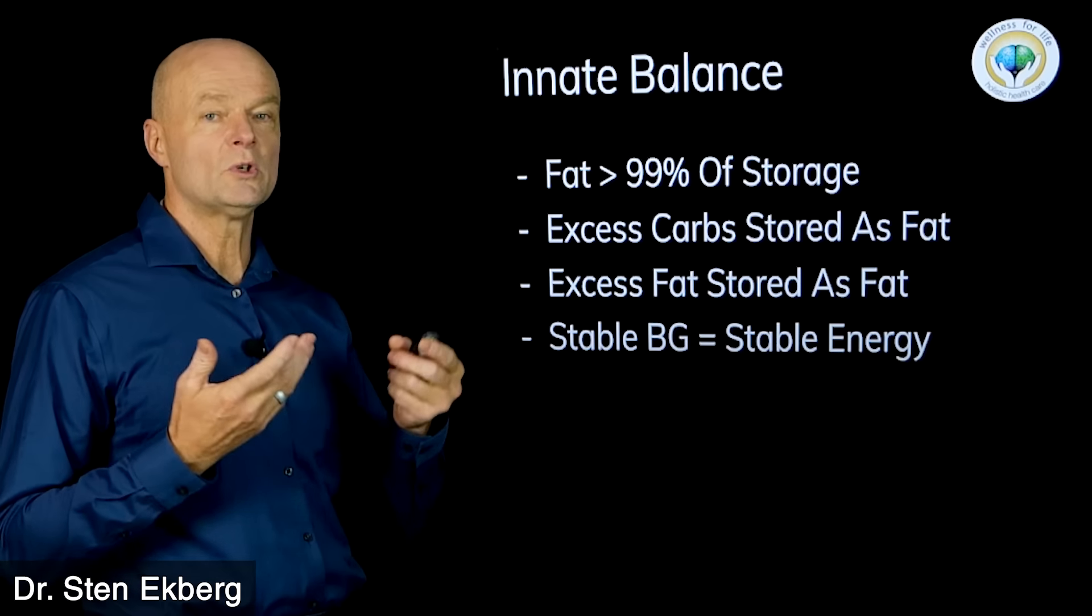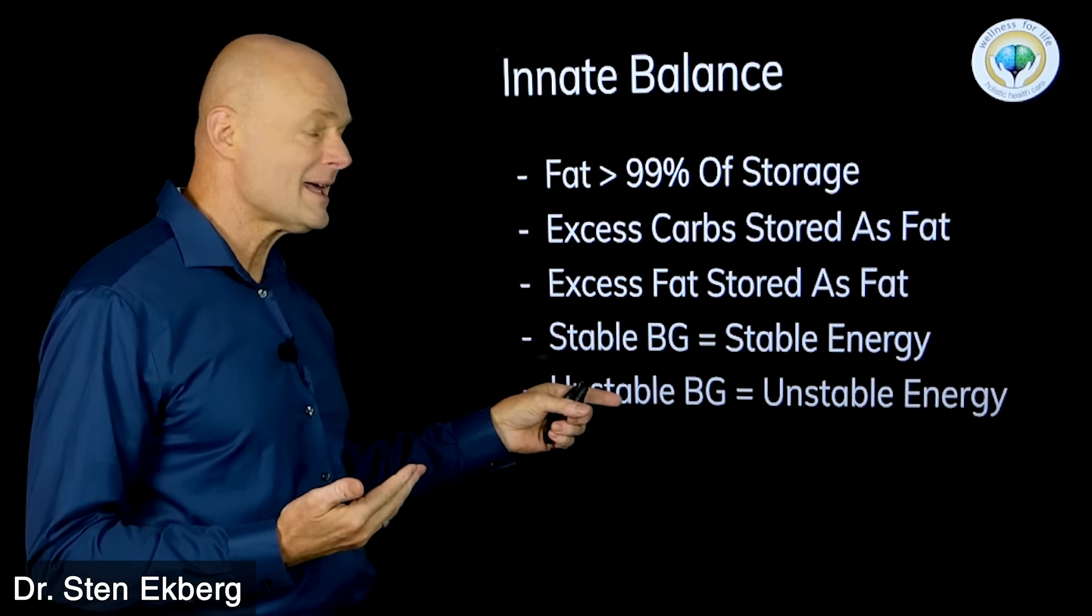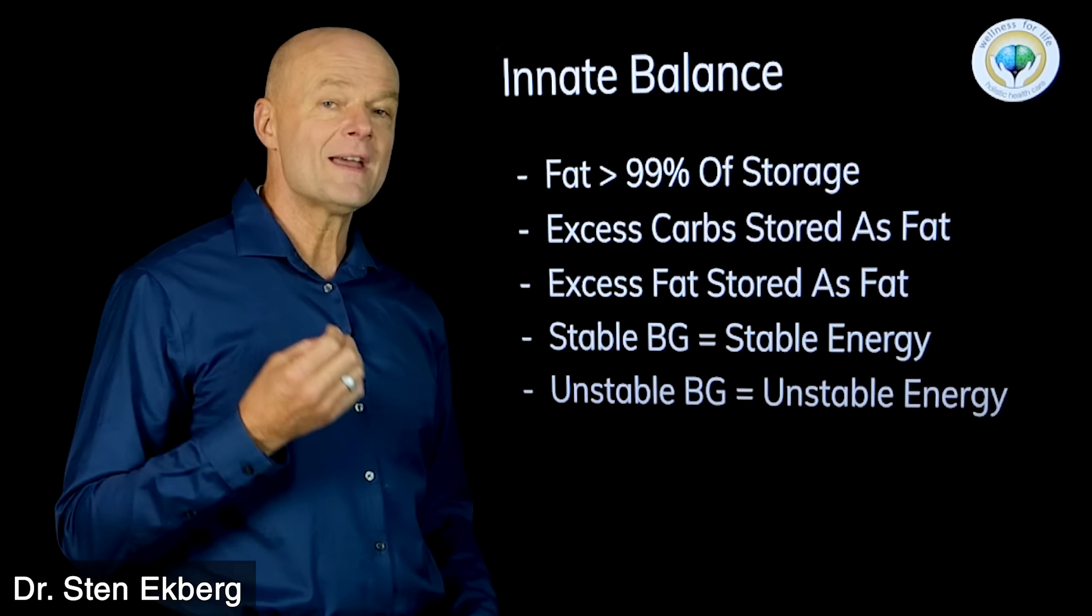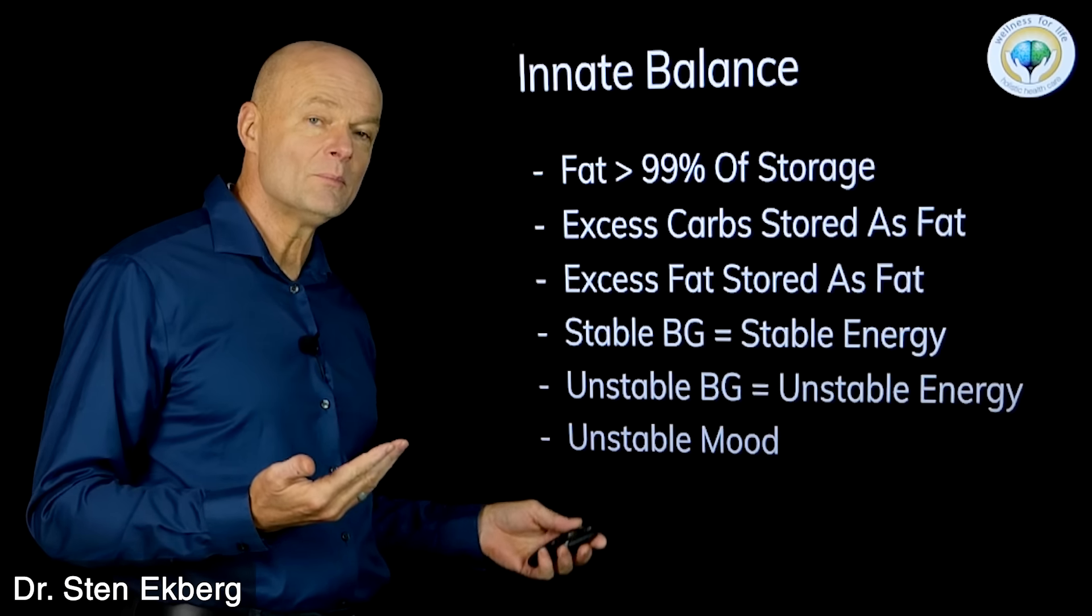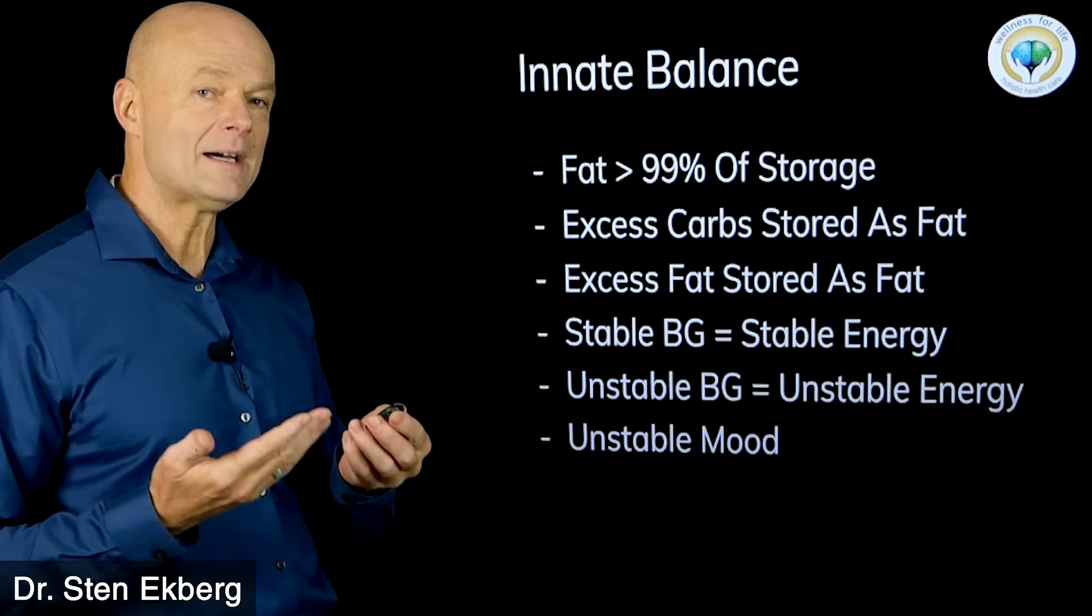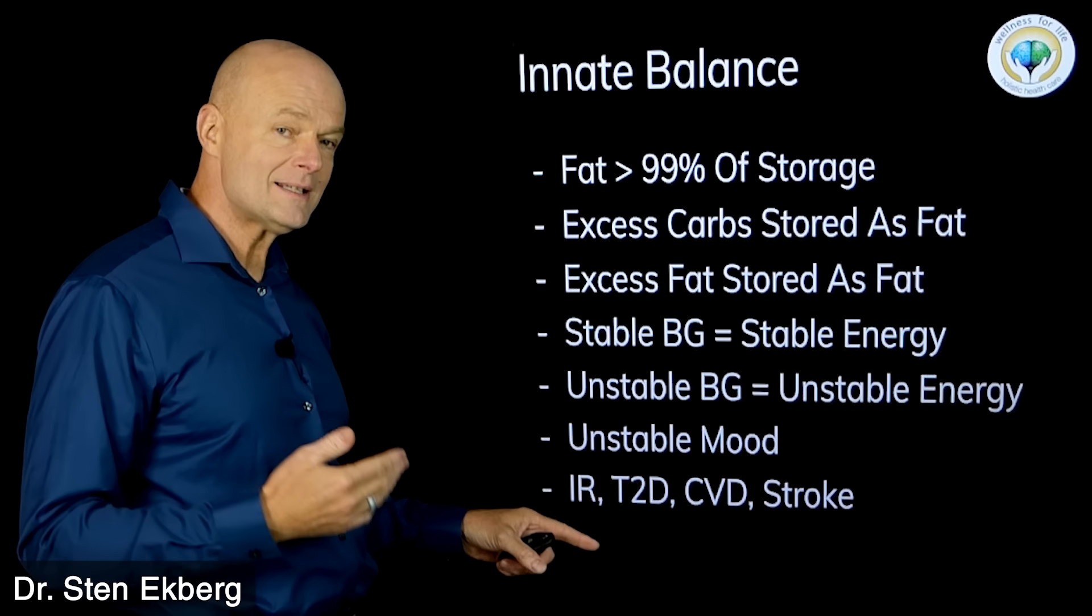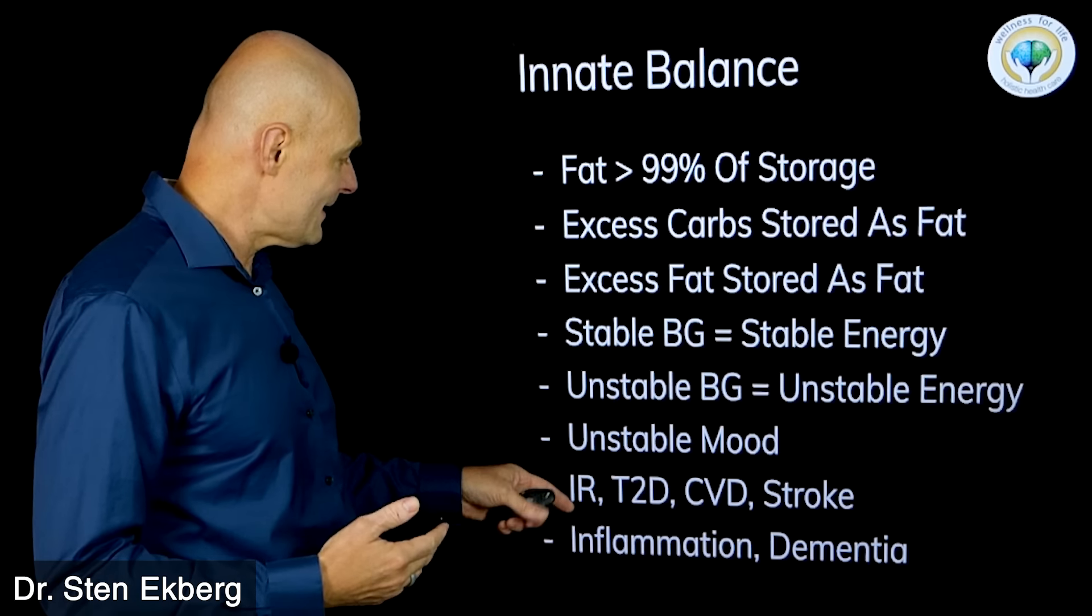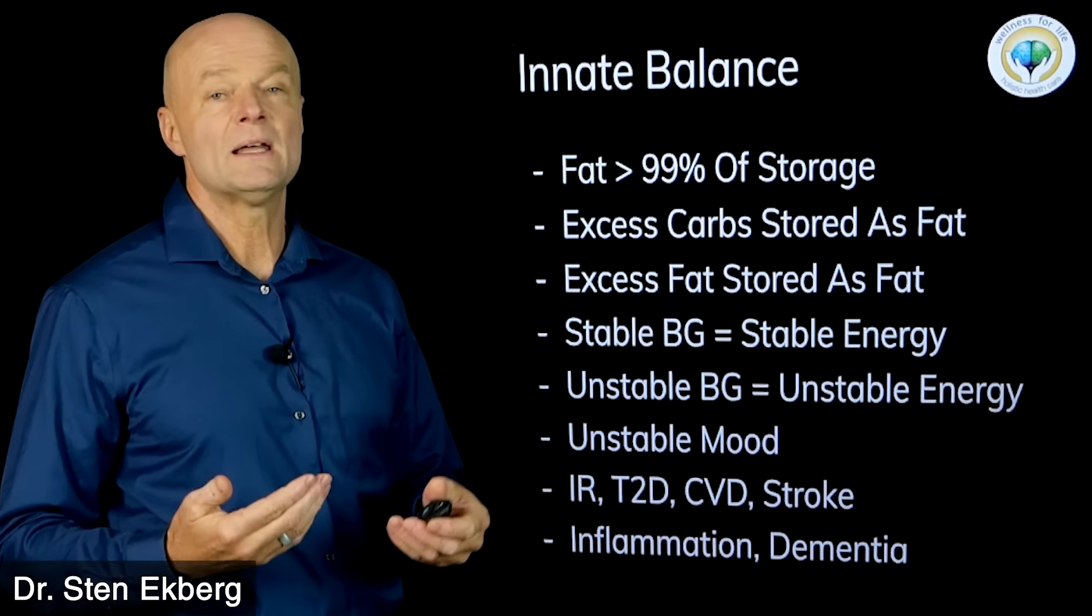Blood sugar is very important but it's not going to be our main source of energy. Stable blood glucose means stable energy. Unstable blood sugar that we get from topping off through food is very unstable energy. Not only energy, but with that we also get unstable mood. When we do this frequently and over and over like we've done as a lifestyle in the modern world, we also get on the track for insulin resistance, type 2 diabetes, cardiovascular disease and stroke, and also low grade chronic inflammation that contributes to all this as well as dementia.